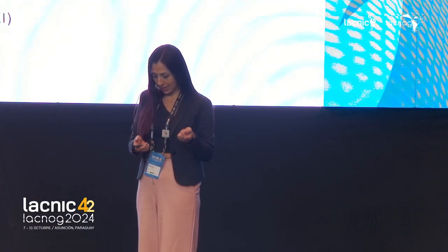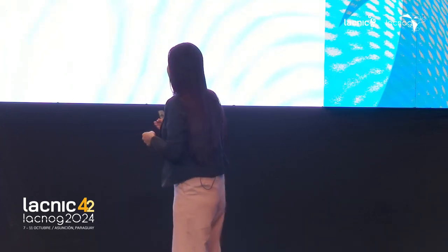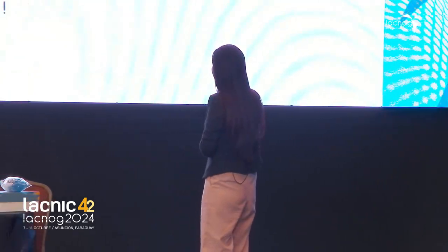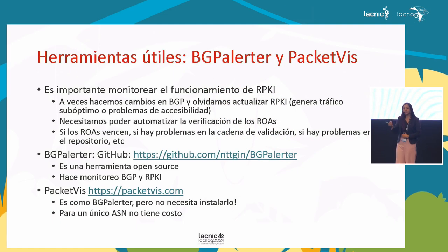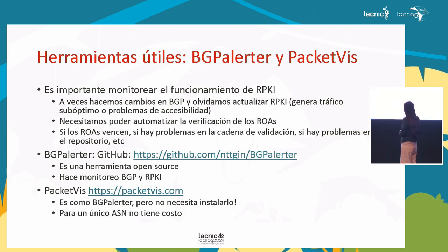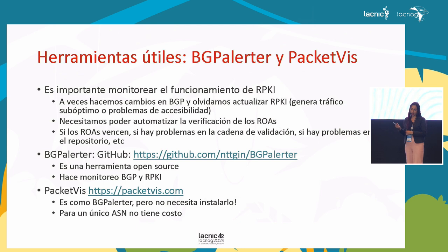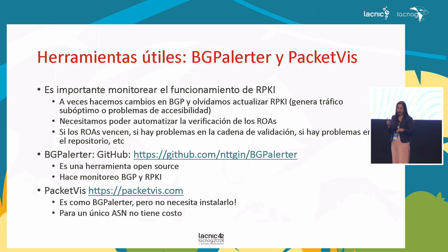There are tools that help automate the monitoring process so we receive notifications via email telling us that there was a change in our autonomous system or our segment, telling us whether we have to update the creation of those certificates. These tools enable us to identify whether there were changes in our BGP routes and whether we have to update anything in our ROA creation. Some ROAs may lose validity—not because of a due date, but because they've been updated—and if we don't update them, we start invalidating that publication.